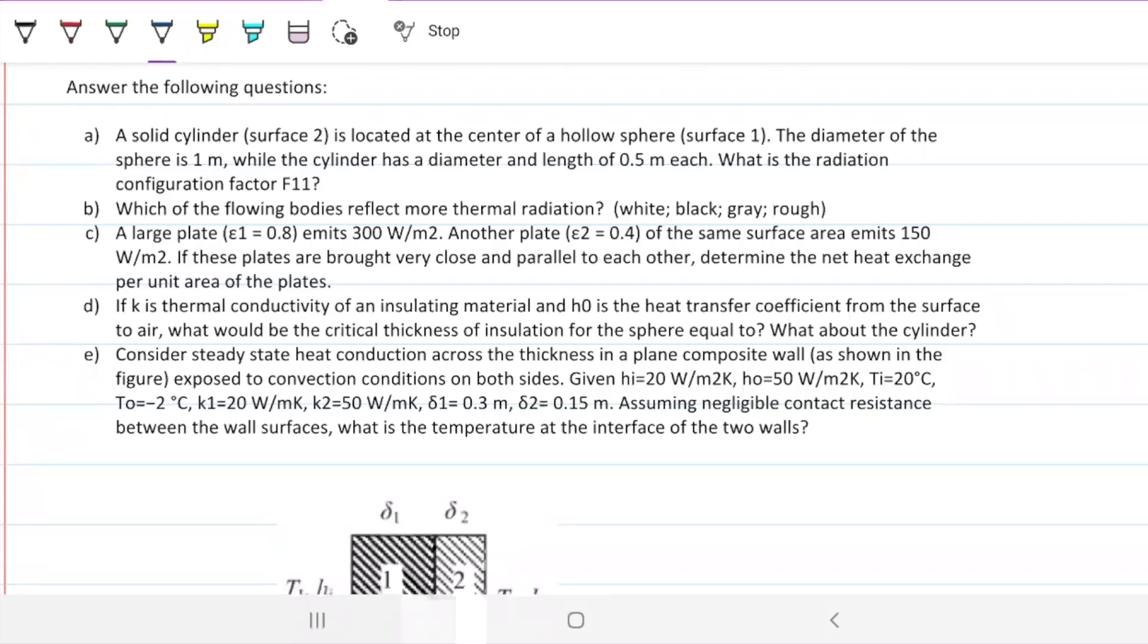A solid cylinder, surface two, is located at the center of a hollow sphere, which is surface one. The diameter of the sphere is one meter, and the cylinder has a diameter and length of 0.5 meters each. What is the radiation configuration factor F11?